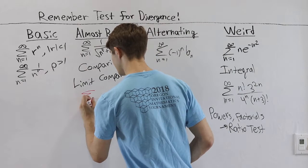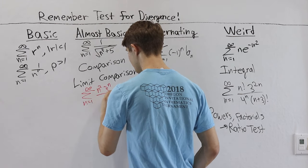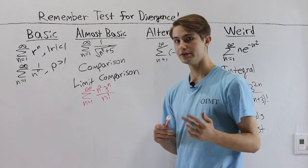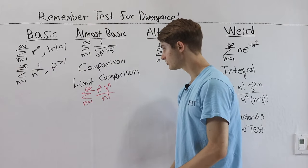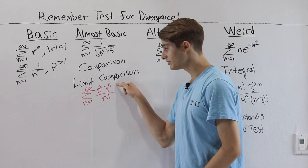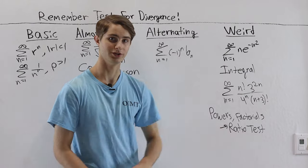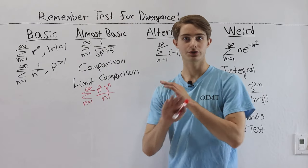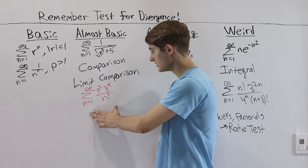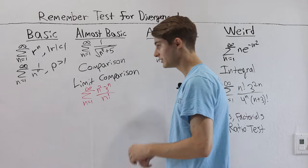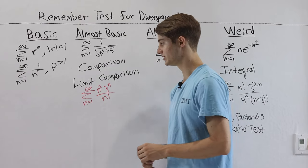Next: the sum from n equals 1 to infinity of n squared times 3 to the n over n factorial. This looks like a weird series — we have factorials and numbers raised to the power of n. Those two things indicate we should use the ratio test. Using the ratio test, we can prove the common ratio as n approaches infinity is less than 1, and therefore this series converges by the ratio test.